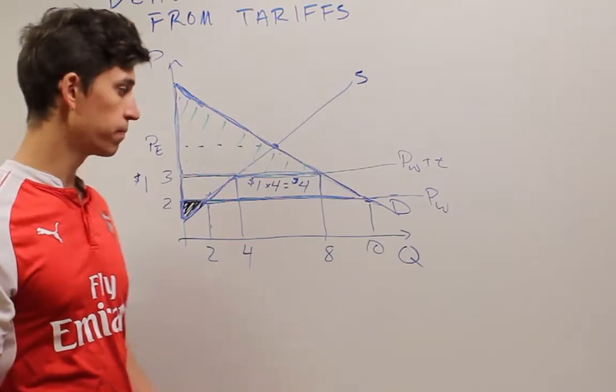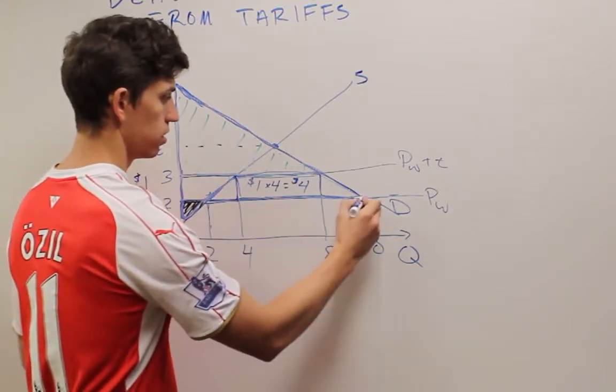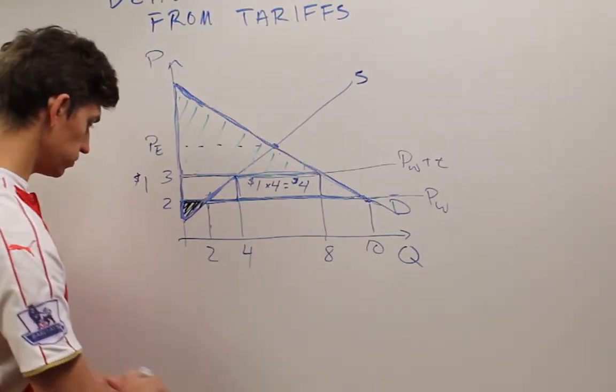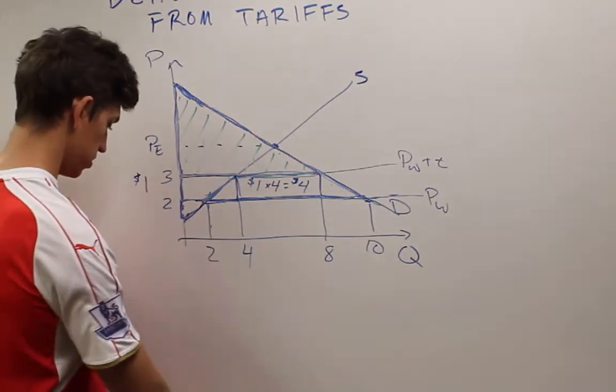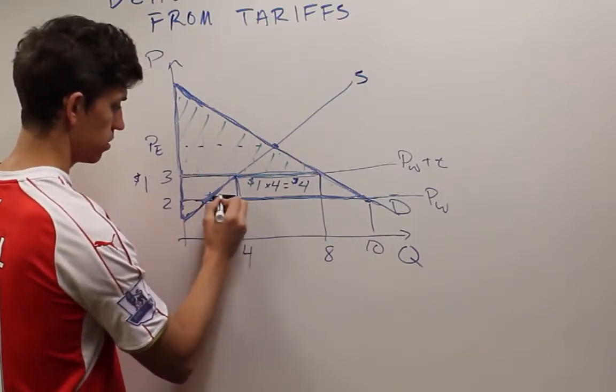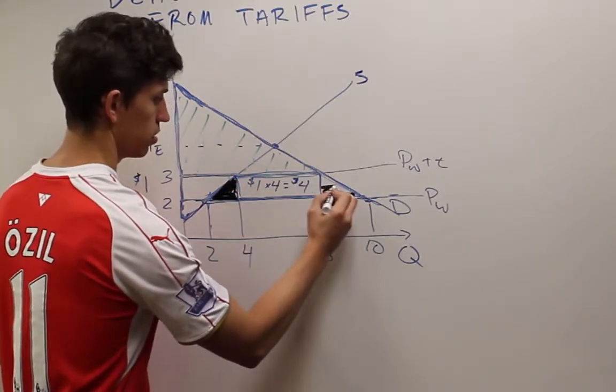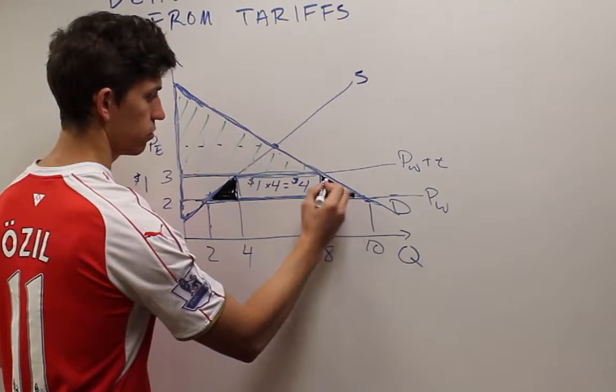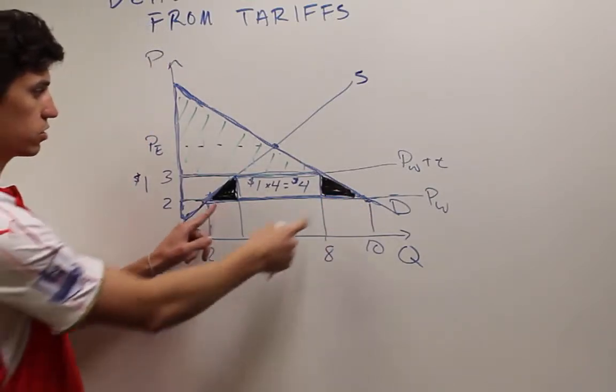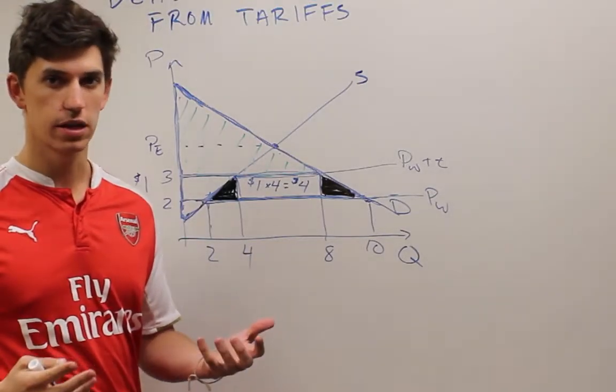These two triangles, on the other hand, are considered a deadweight loss. So this triangle right here, and this triangle right here, they're actually called the consumption and production inefficiency losses sometimes. But these two make up the net loss to society from adding this tariff in.